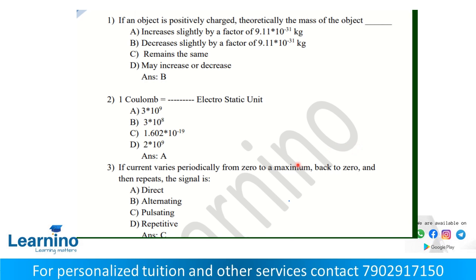If an object is positively charged, theoretically the mass of the object decreases slightly by a factor of 9.11 into 10 raised to minus 31 kilogram. Depending on the mass of the electron, the answer is B.